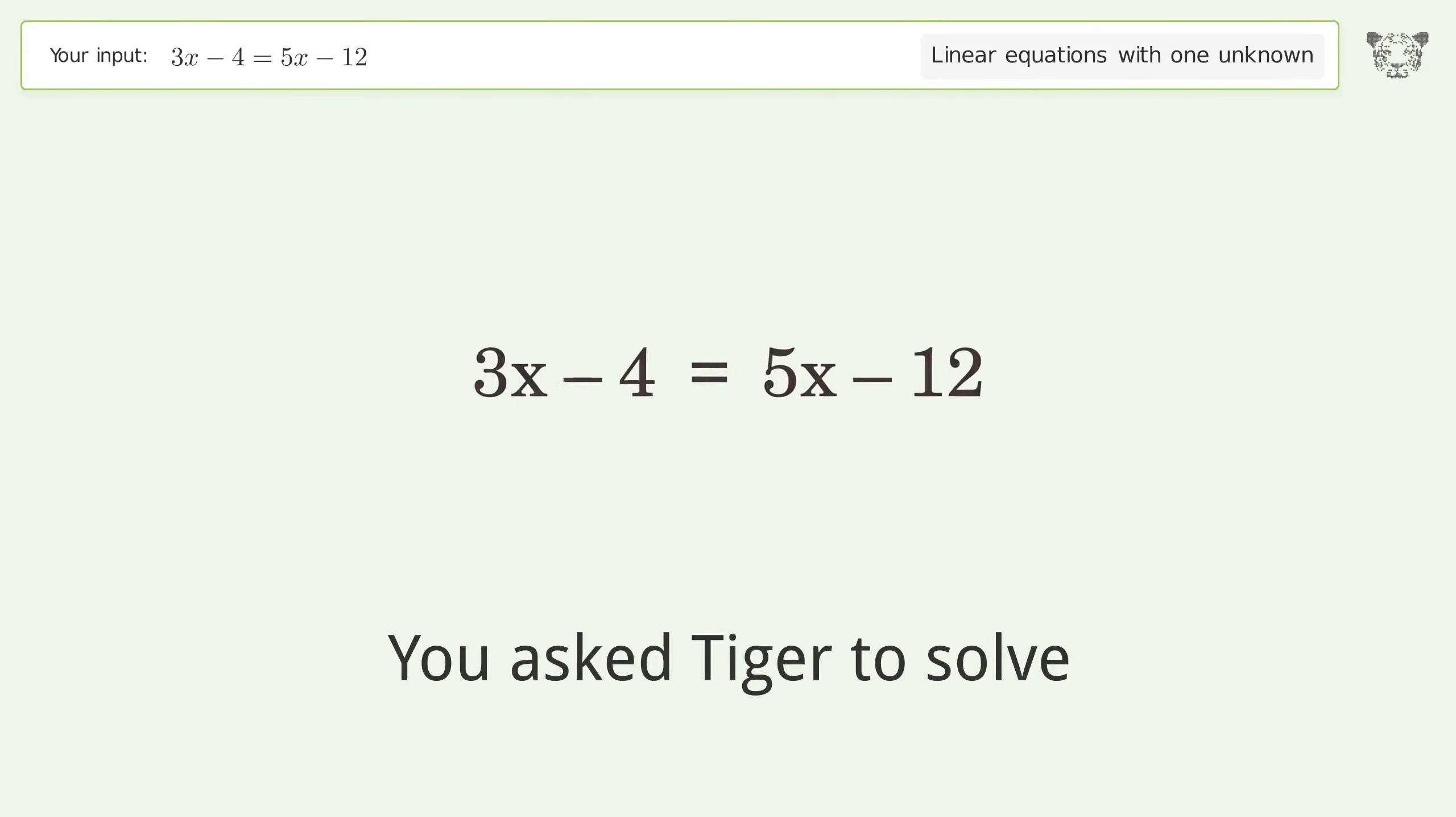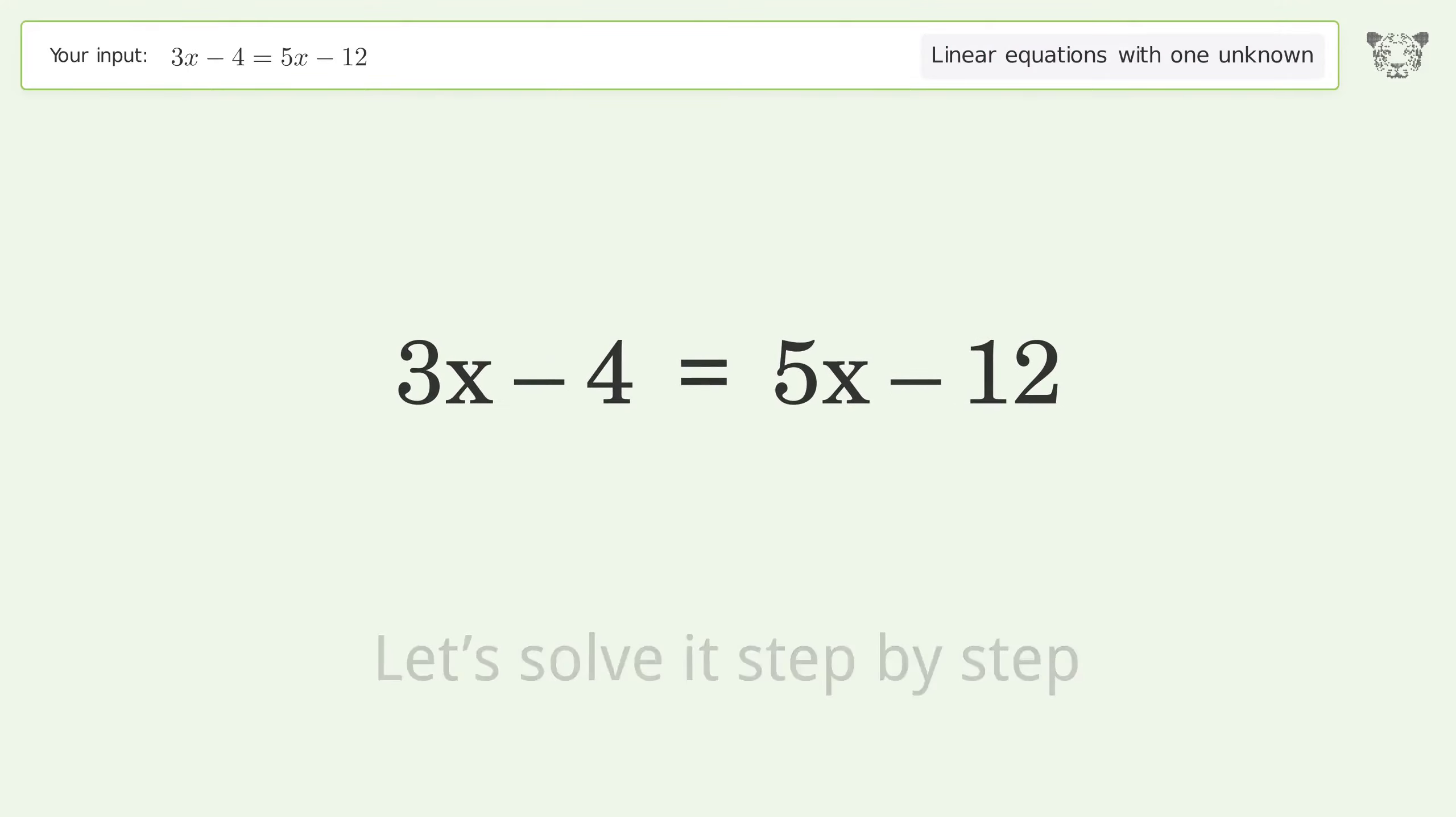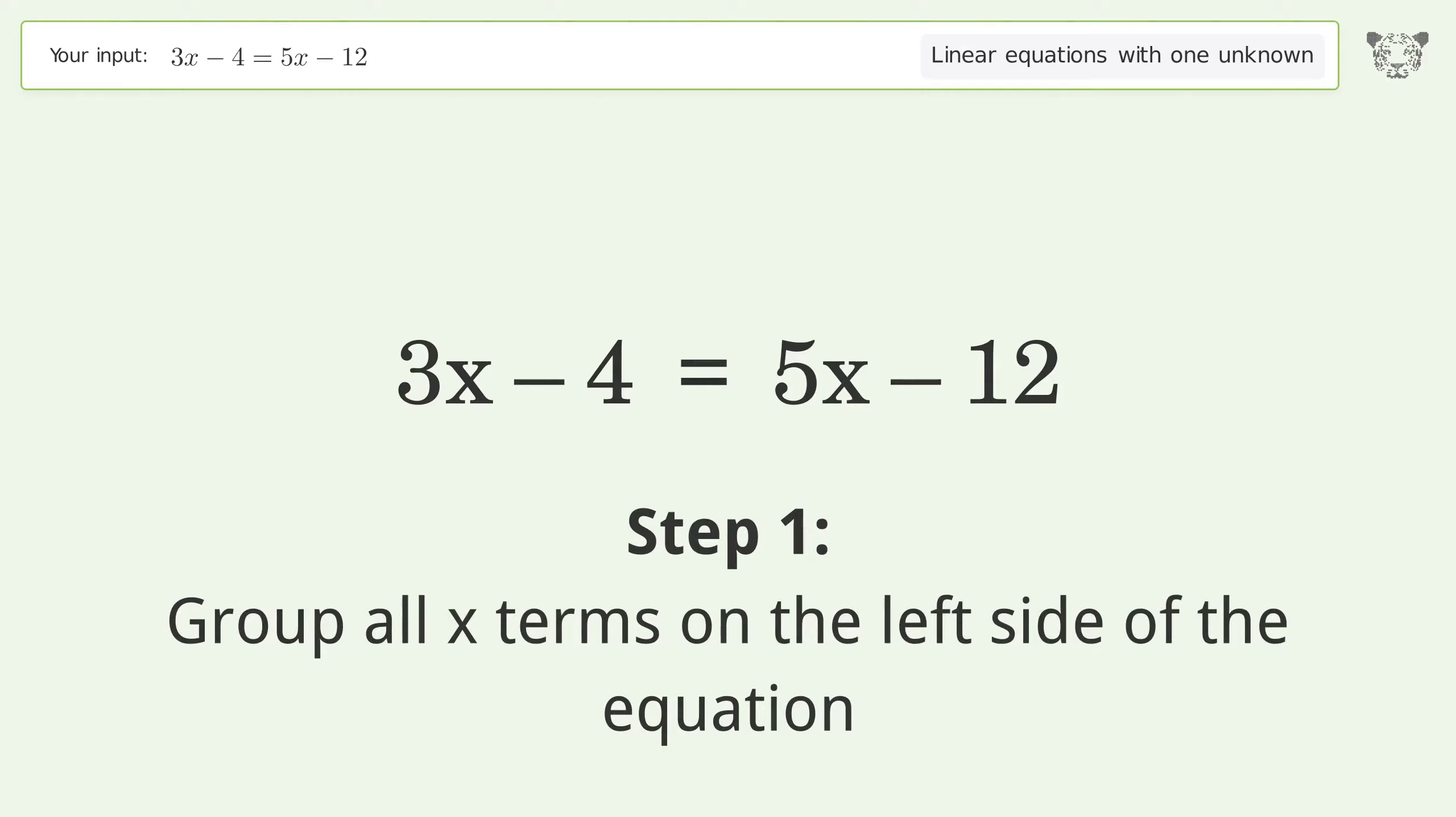You ask Tiger to solve this. This deals with linear equations with one unknown. The final result is x equals 4. Let's solve it step by step. Group all x terms on the left side of the equation.